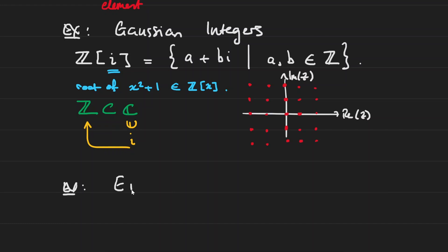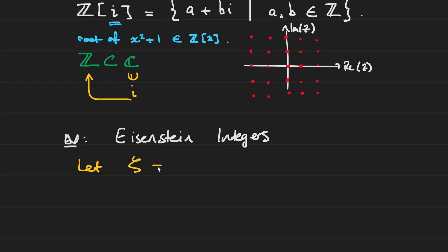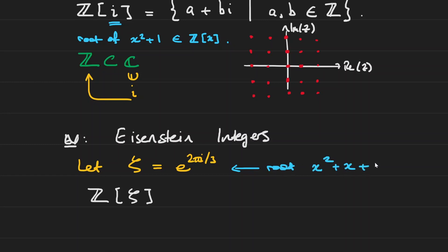The next example are the so-called Eisenstein integers. We define a constant ζ = e^(2πi/3) in the complex plane. The Eisenstein integers are defined to be the integers adjoined this element ζ. Now ζ is actually a root of the polynomial x² + x + 1. If you draw out your complex plane, ζ is sitting at one point, ζ² = e^(4πi/3), and if you do the vector addition — you have your ζ, add on ζ², and then add one — it gets you back to zero.